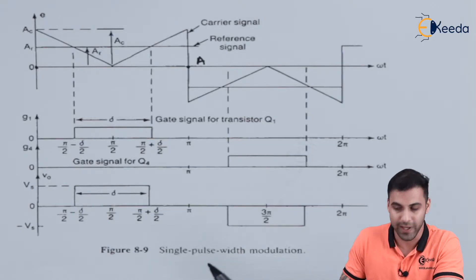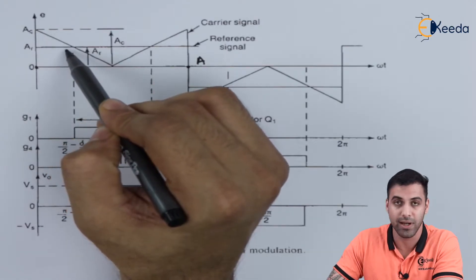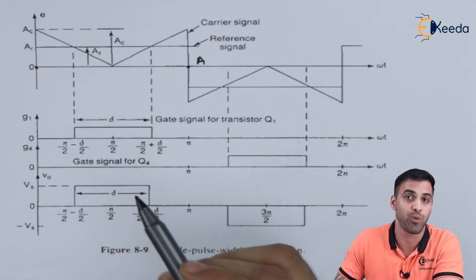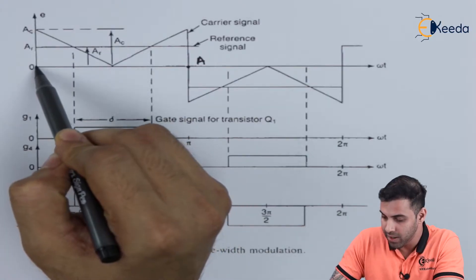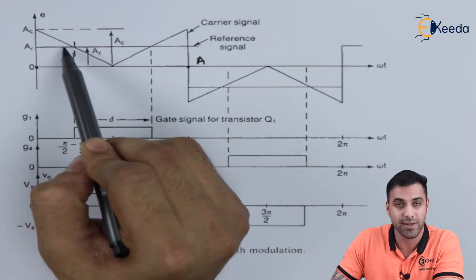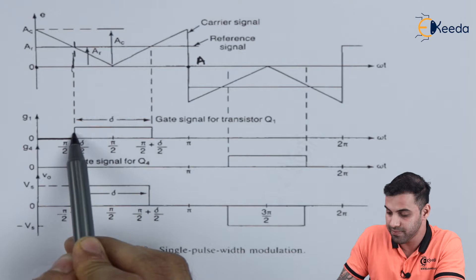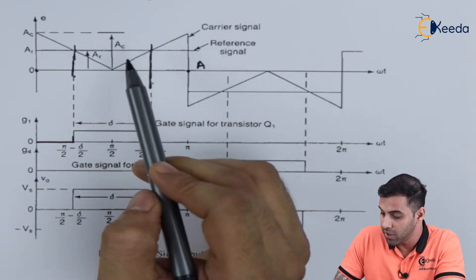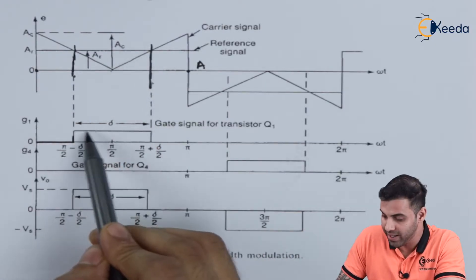What the comparator does is: if the carrier signal is greater than the reference signal, the output becomes 0. And if the carrier signal is less than the reference signal, the output becomes 1. From the time interval where the reference signal is less than the carrier signal, the output we are getting across the gate pulse is 0. From this point to this point, where the carrier signal is less than the reference signal, the output we are getting is 1.